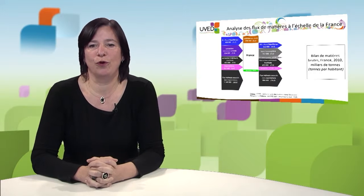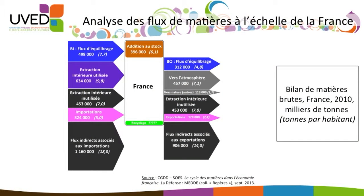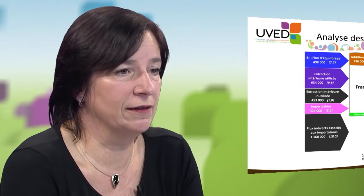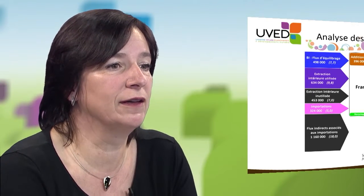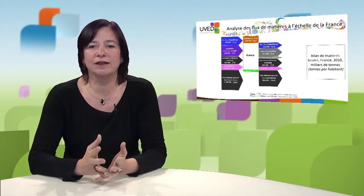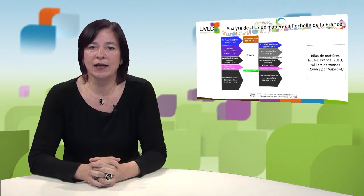The figure here shows the material balance carried out for France for 2010, expressed in thousands of tons and tons per inhabitant. When we do that, we need to define the system we study. This is France, limited by its borders, and the studied system includes only the population, its activities, and its artifacts, but not the resources provided by the territory itself, which are regarded as inputs. We will look at everything as an input and everything as an output.